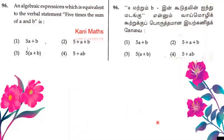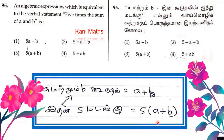Question number 96. An algebraic expression which is equivalent to the verbal statement 'five times the sum of A and B' is 5 multiplied by A plus B. The option is 5 times (A plus B).